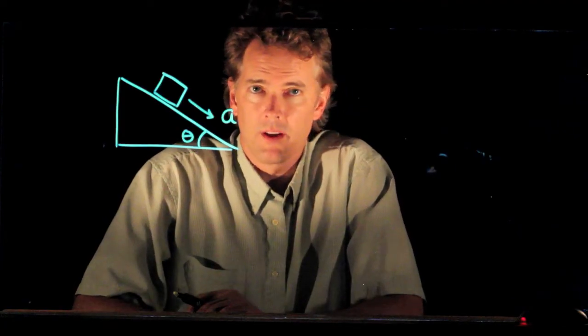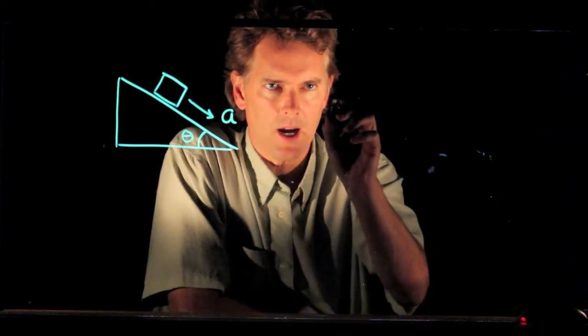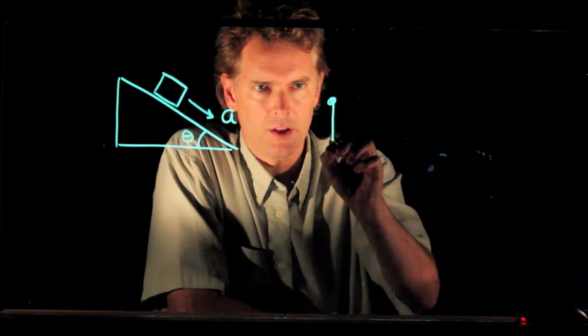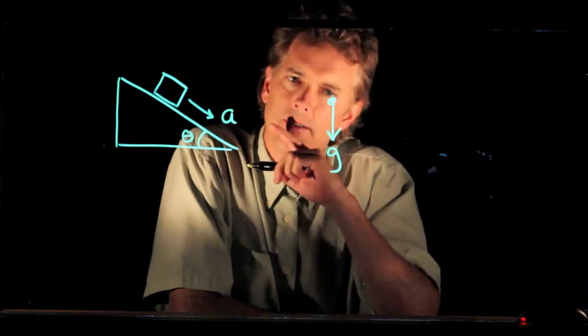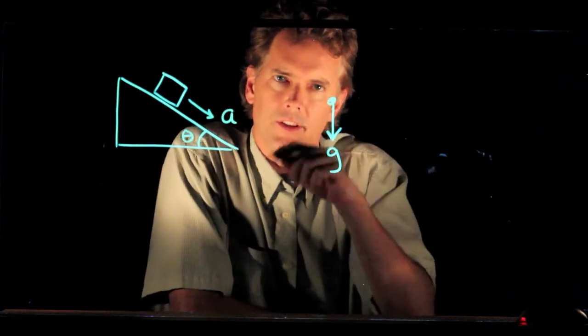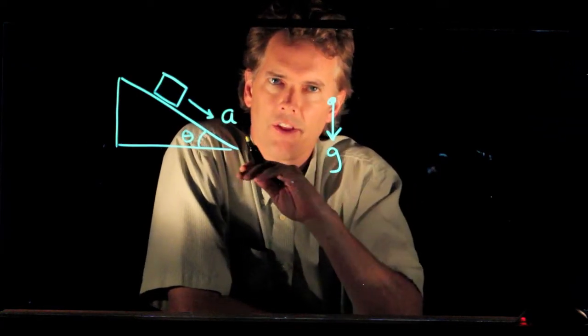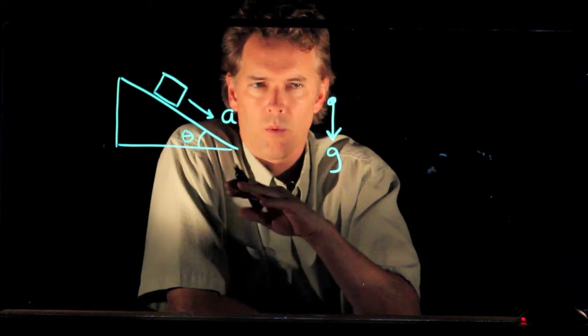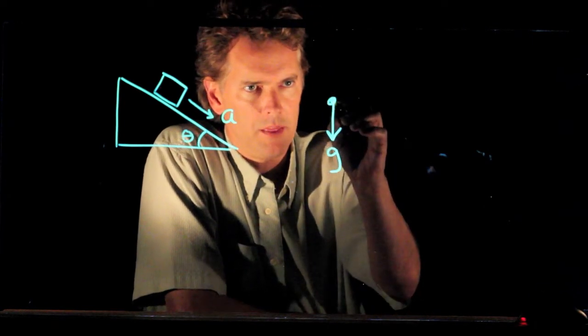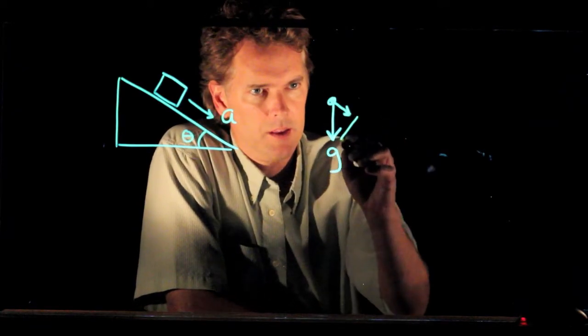Now, we don't know exactly what that acceleration is, but we do know if that box had fallen straight down, it would accelerate with g. This looks like a vector, and I can draw that vector as the sum of two other vectors. So one of those vectors could be this one, and the other vector could be this one.